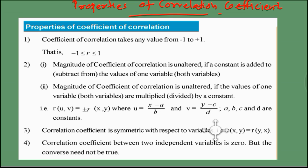The third property is that the correlation coefficient is symmetric with respect to the variables, that is, r(xy) = r(yx). The fourth property is that the correlation coefficient between two independent variables is 0, but the converse need not be true. These are the properties of correlation coefficient, and we have reached the end of Carl Pearson's correlation coefficient.